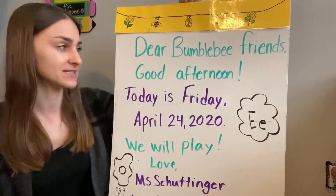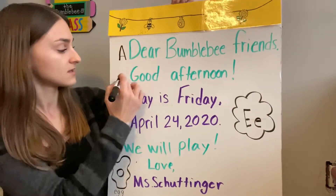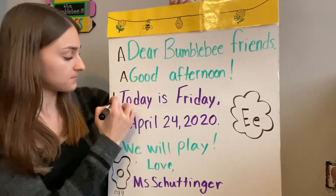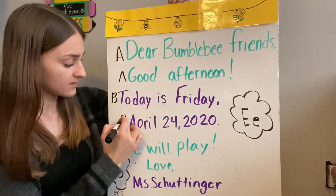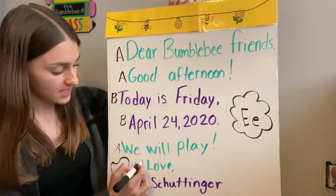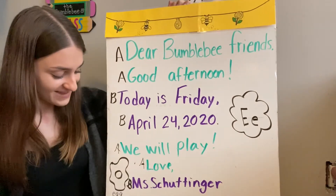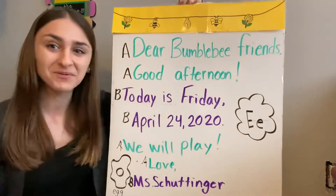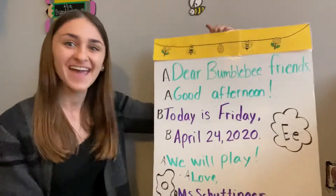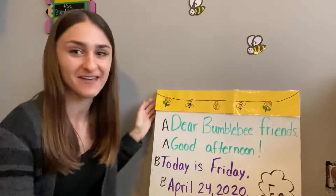Let's label it together. A, A, B, B, A, A, B, B! Nice job Bumblebee! So what kind of pattern do we have? An A, A, B pattern. Let's tap that out together.